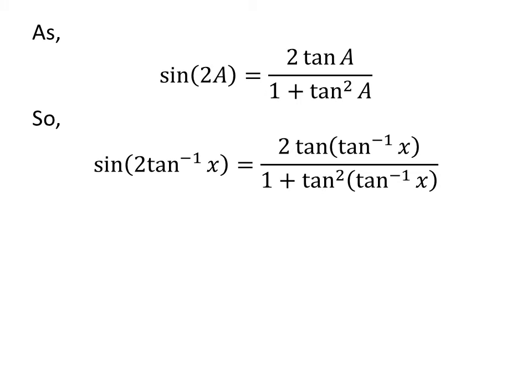So, sine of 2 arc tangent x equals 2 tan(arc tan x) over 1 plus tan²(arc tan x).